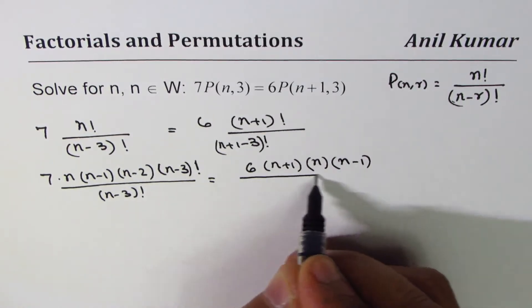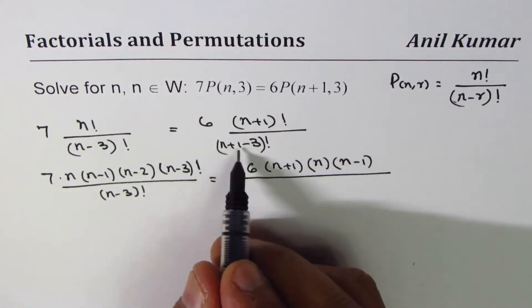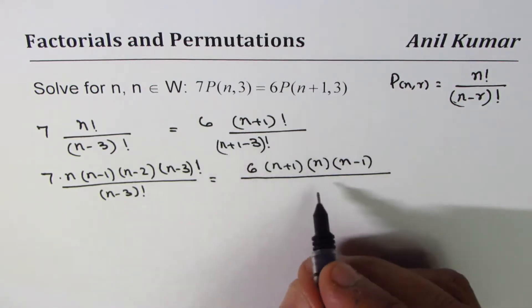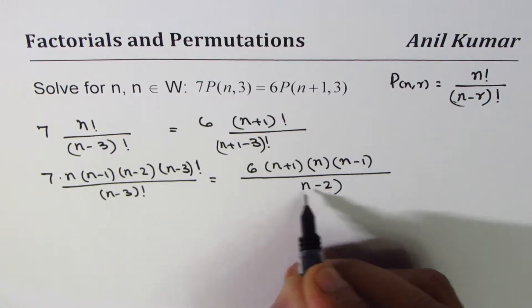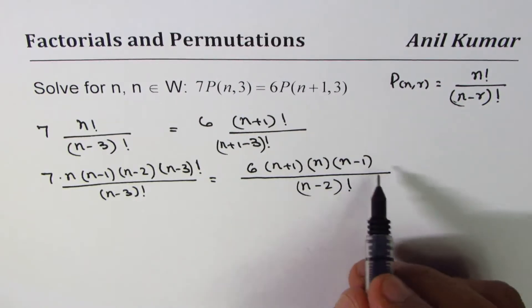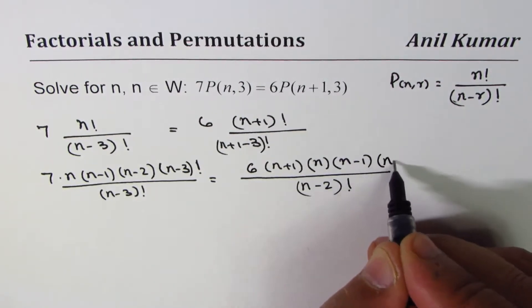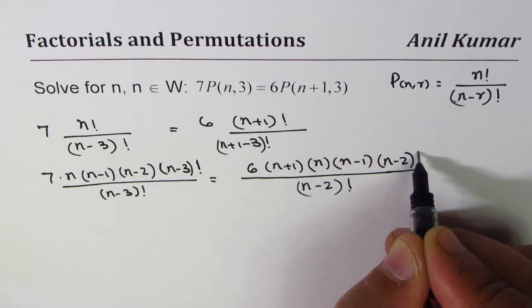Before going further, let me write the denominator: (n+1) minus 3 means (n-2) factorial. So we'll go one more step, we have (n-2) and then we'll write this as a factorial.